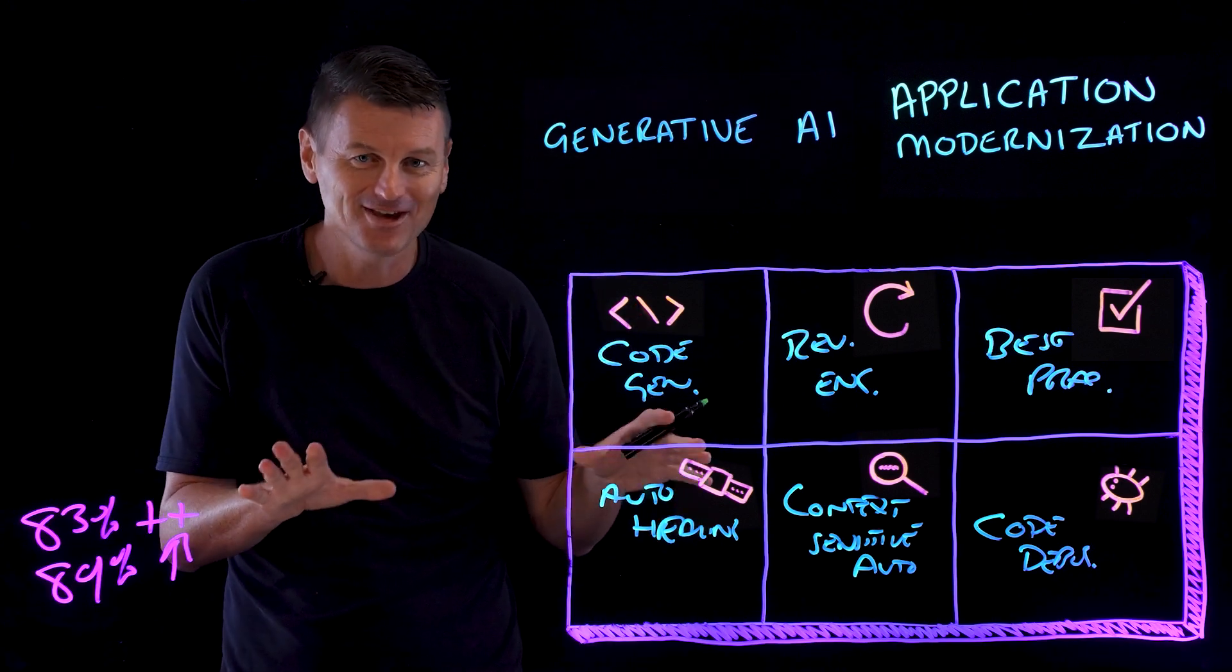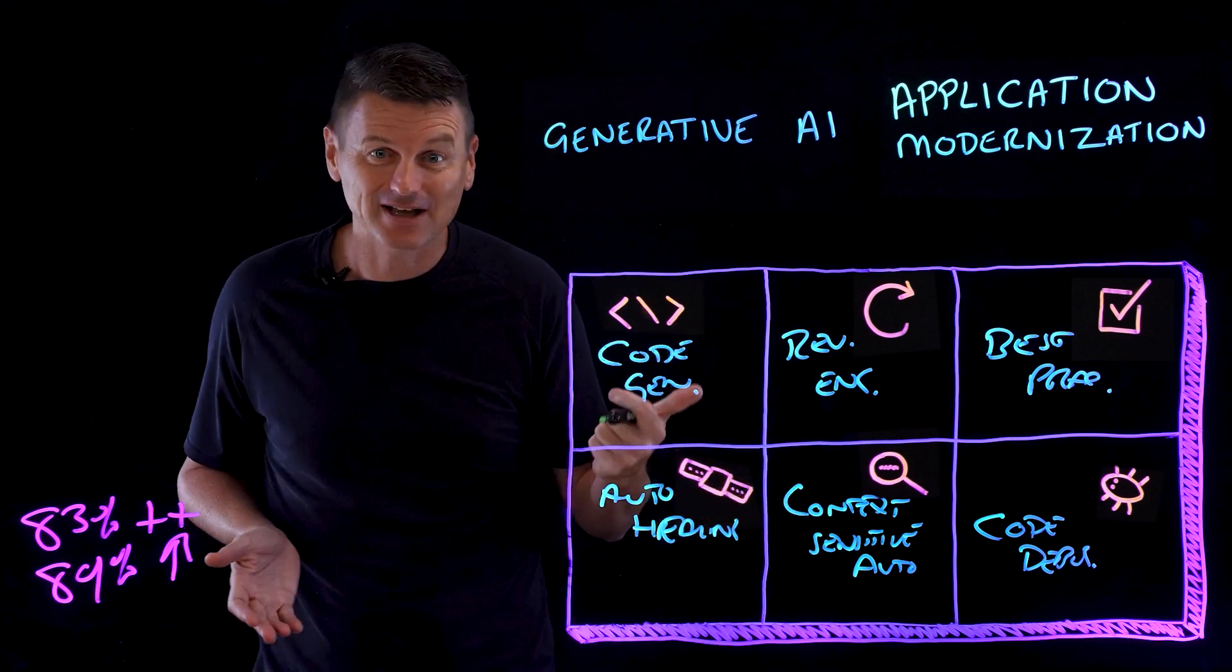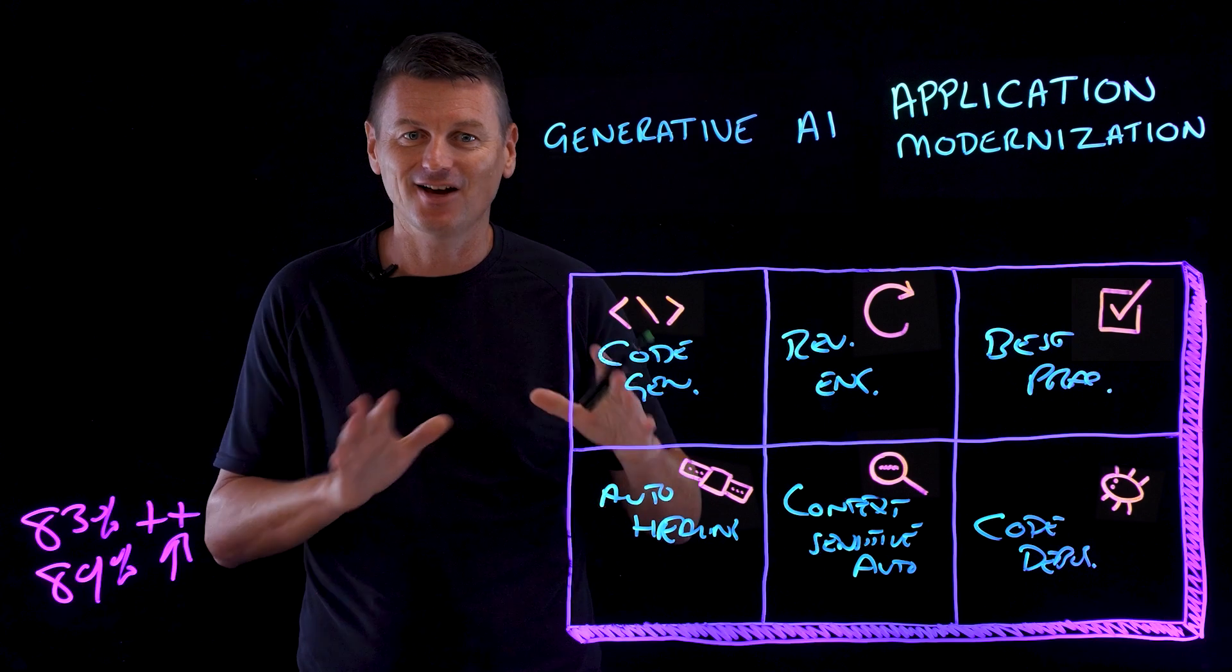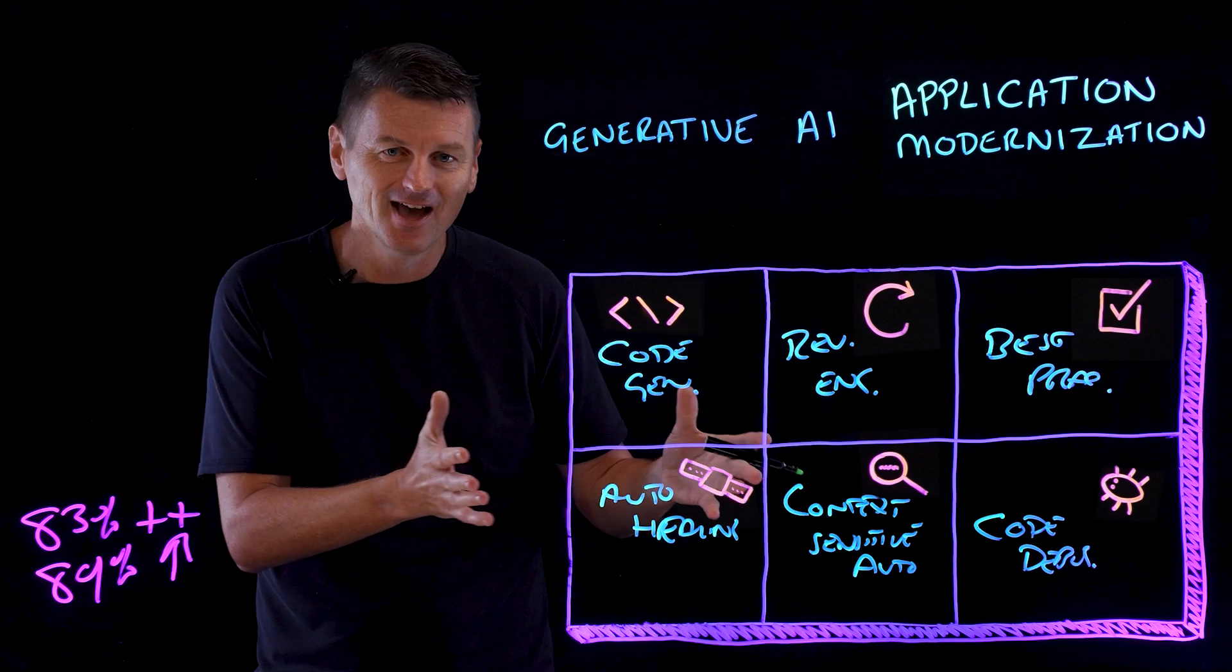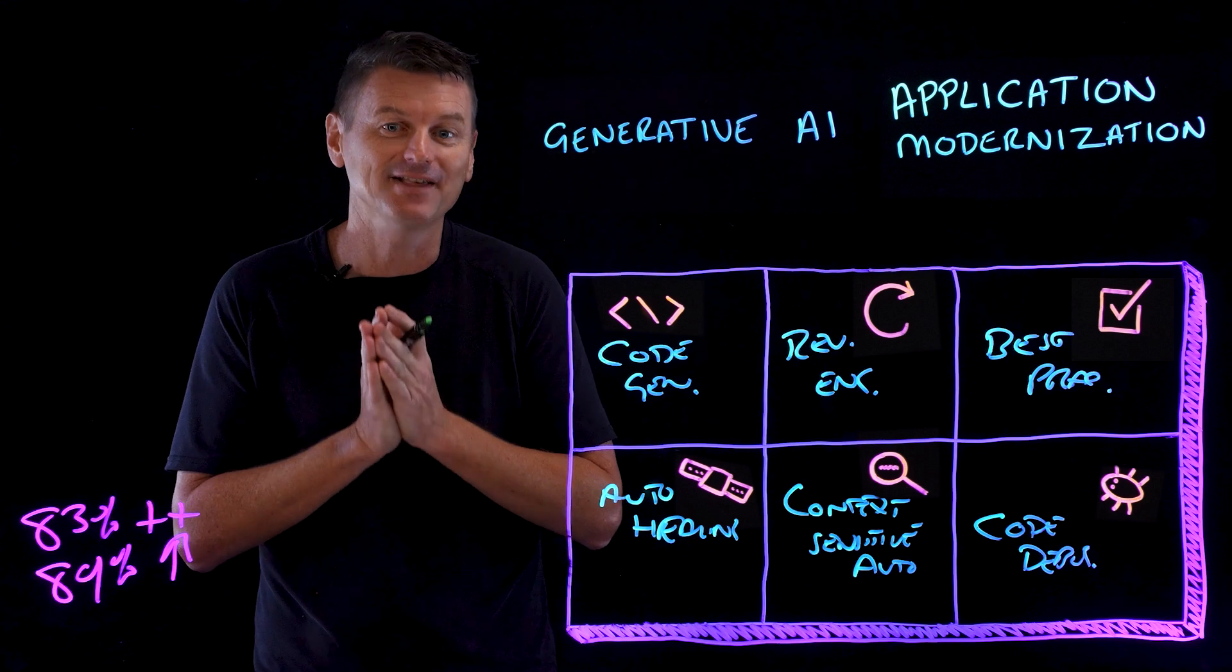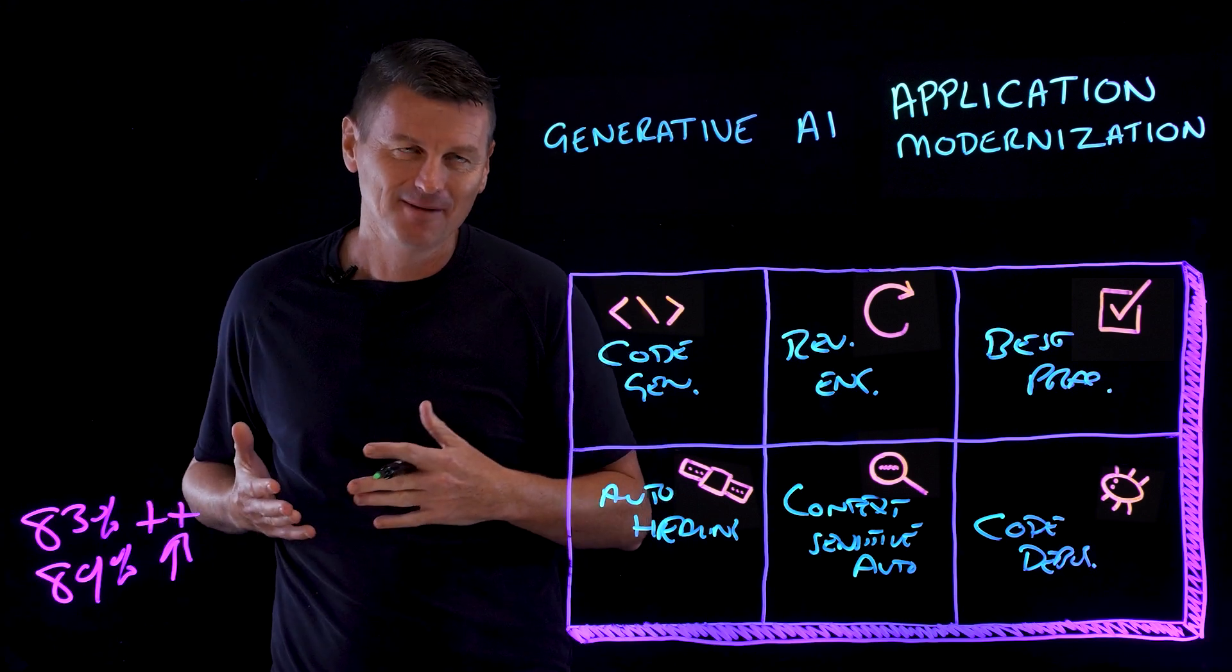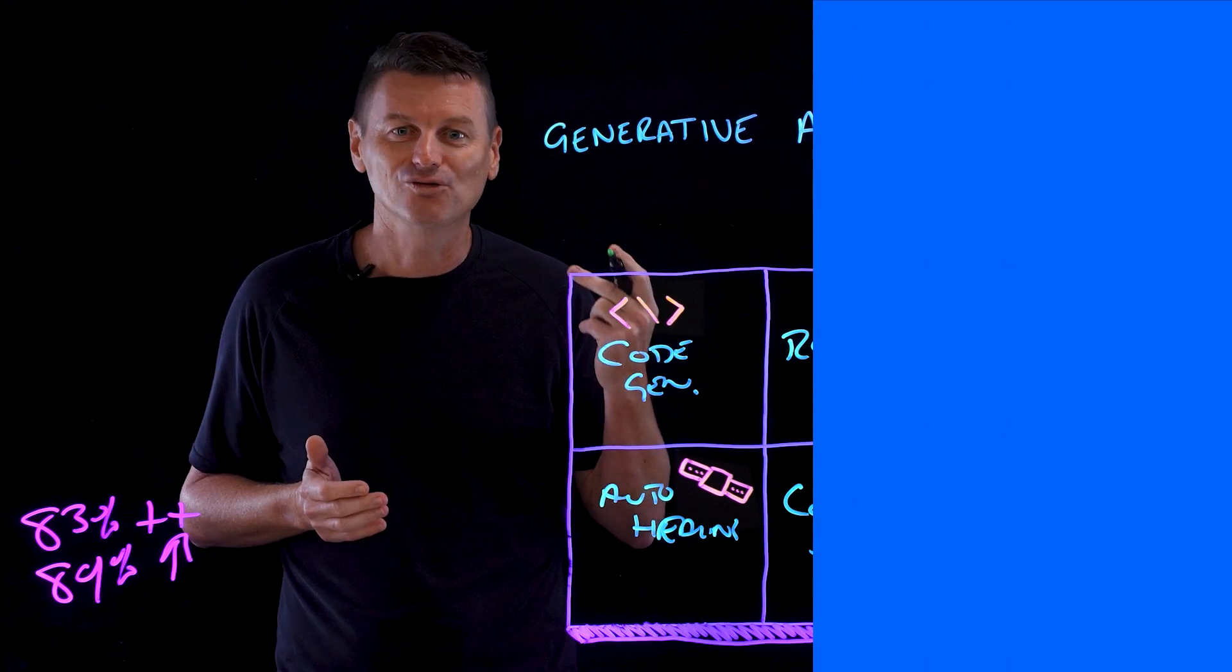Now, there are a bunch more I wanted to include, but this table has only got so many cells. Code refactoring would have been another one. Documentation generation, I'd probably have that on my list as well. Now, do keep in mind, it's early days. These capabilities are still maturing. Still, if nothing else, I hope I've piqued your interest in exploring how generative AI can help as a transformative force in the app modernization space. It's not just about updating old software, but reinventing it, ensuring it's adaptable, efficient, and ready for the future.